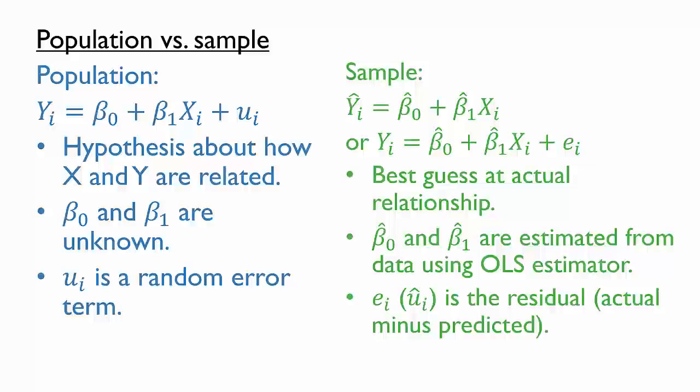Although we hope we are estimating the parameter accurately, we generally should not expect the sample estimates β̂₀ and β̂₁ to equal the population parameters β₀ and β₁. To see this, let's try a simulation.